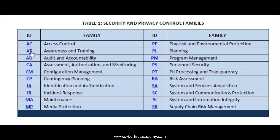I wouldn't bother too much with AT. I would go to AU — audit and accountability — so you should know AU controls. CA is pretty much what you do as a cybersecurity professional doing the Risk Management Framework, so you should already know this without studying it separately. CM — configuration management — is a key security control you should know. It deals with how the system is set up and how it's implemented.